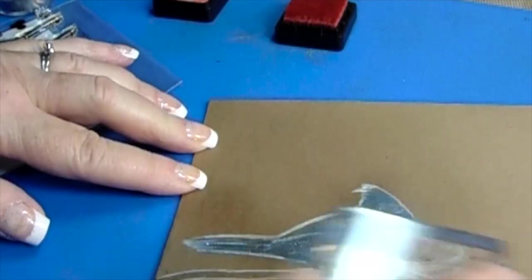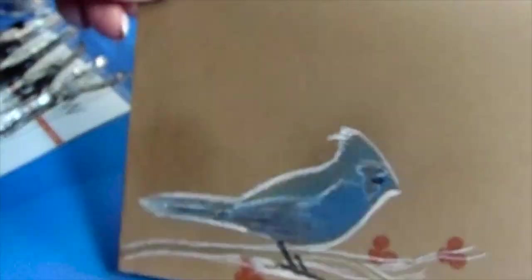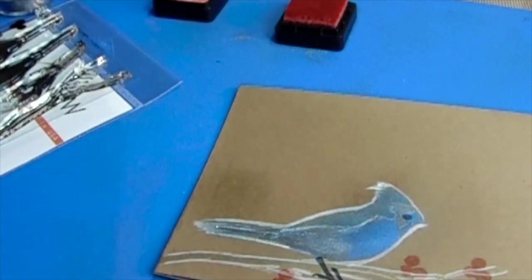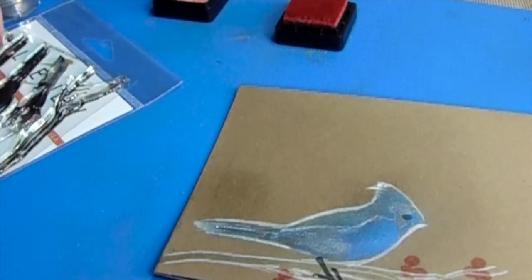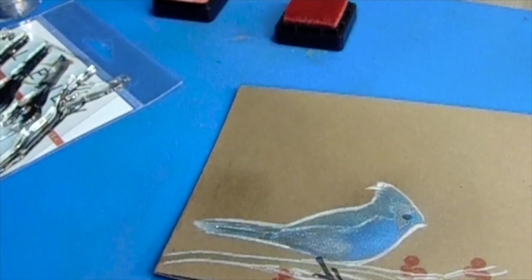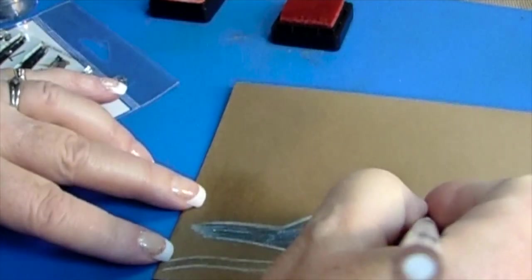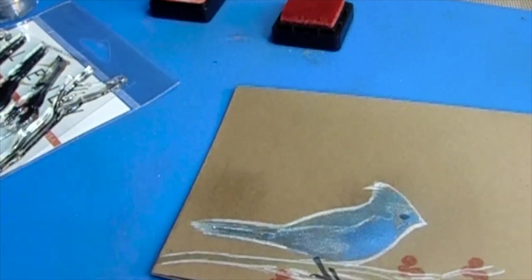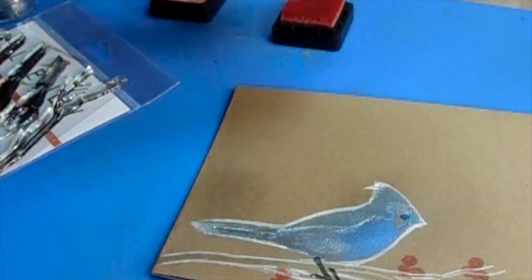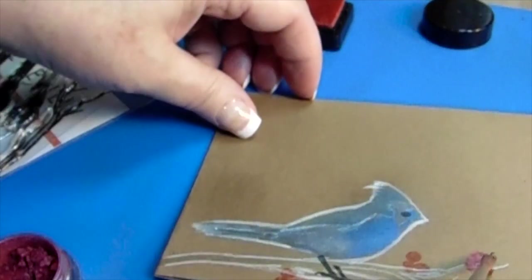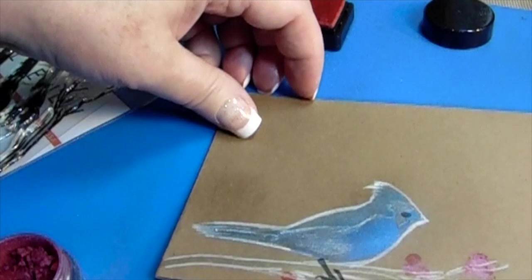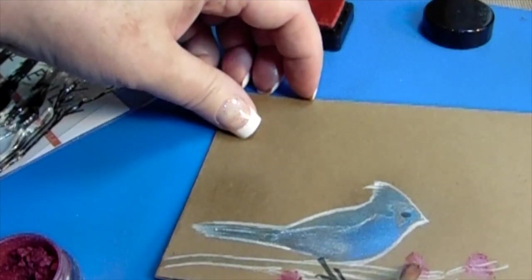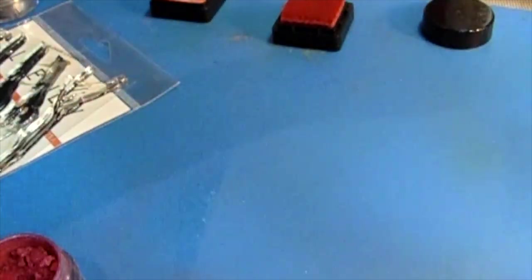I wanted to add these little berries on the branch because I had this deep logan berry raspberry Perfect Pearl color. Distress inks will hold Perfect Pearl powder down just like your Versamark will. You just go over top, take your blush brush, remove the excess, and it looks beautiful.